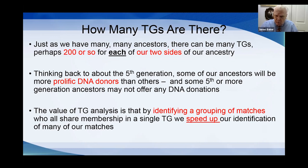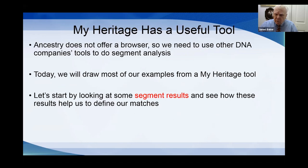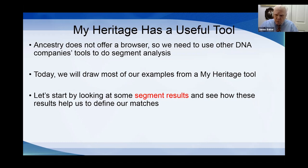The value today of looking at this kind of analysis is that if we identify these groups of matches — all sharing membership in a single triangulated group — that's going to greatly speed up our identification of many of our matches that maybe had lower scores and were more difficult to deal with. To do this, MyHeritage has an especially useful tool. Some of the other sites have tools as well: FTDNA has a browser, GEDmatch will work with a browser, and we know that Ancestry does not have a browser — that's its major weakness. Today, we're going to draw most of our examples from MyHeritage, but also a few from other companies.